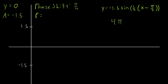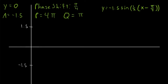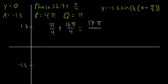The quarter period is 4 pi over 4, which is pi. Since our phase shift is positive pi over 4 and we're sketching the period going forward, we won't cross the origin in our calculations. So we use the end of the period as a reference point. To find where the period ends, we add the phase shift to the period length: pi over 4 plus 4 pi equals pi over 4 plus 16 pi over 4, which is 17 pi over 4.